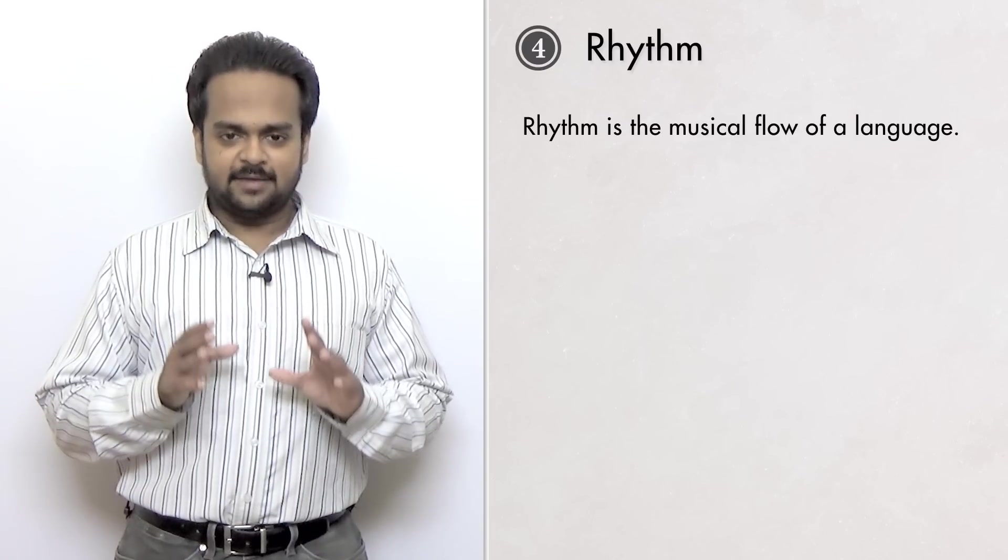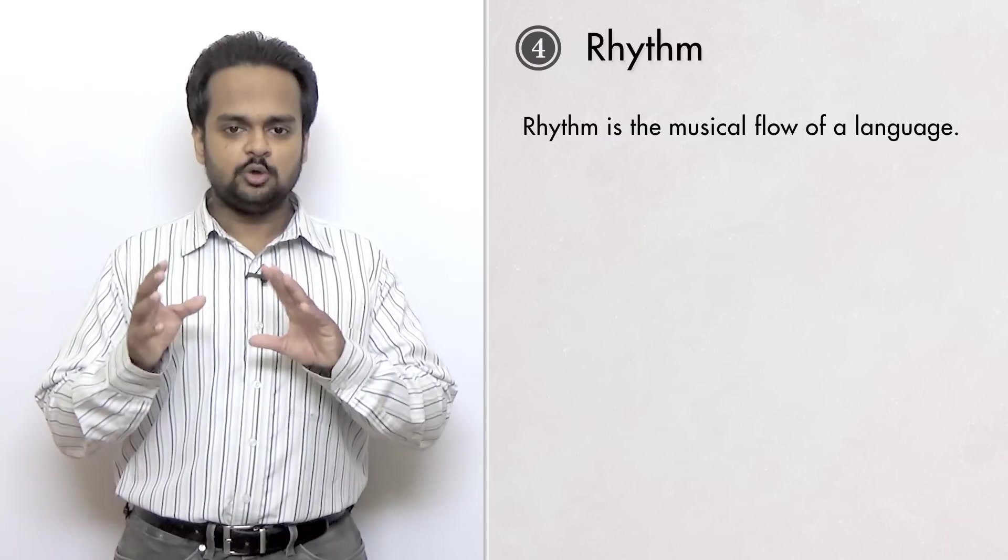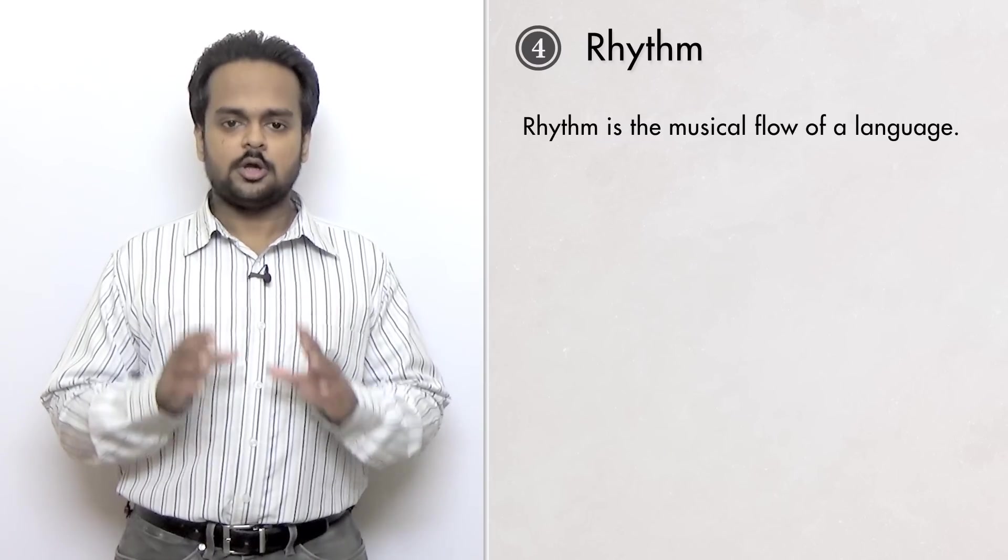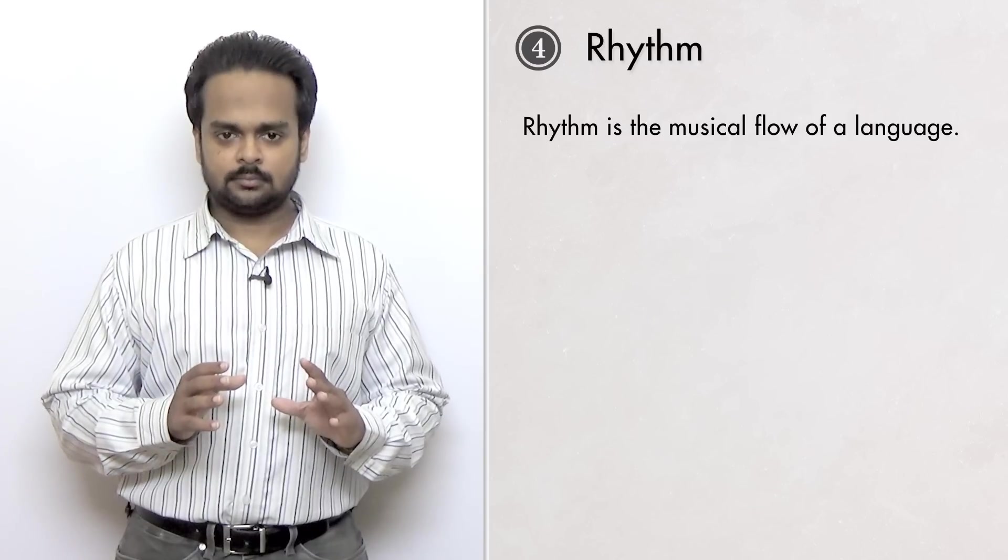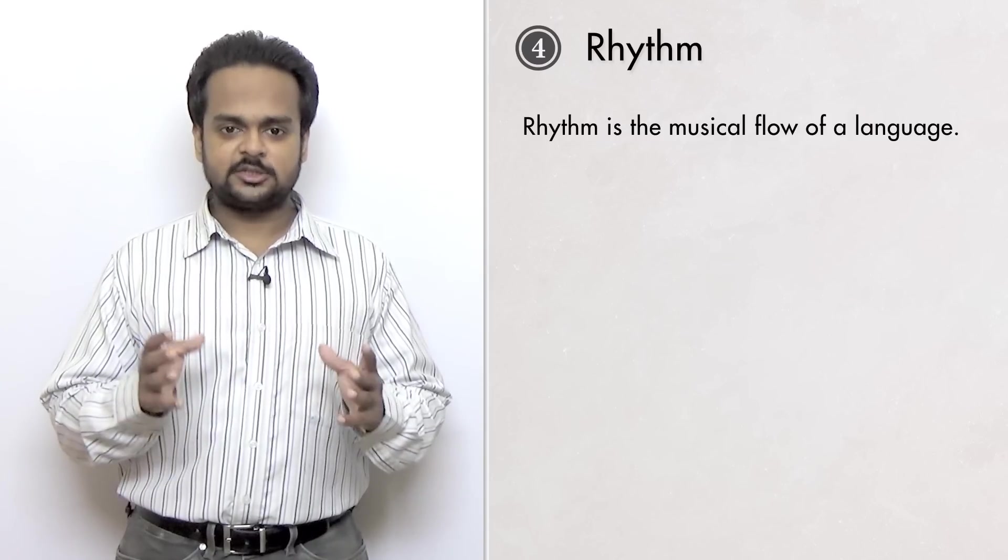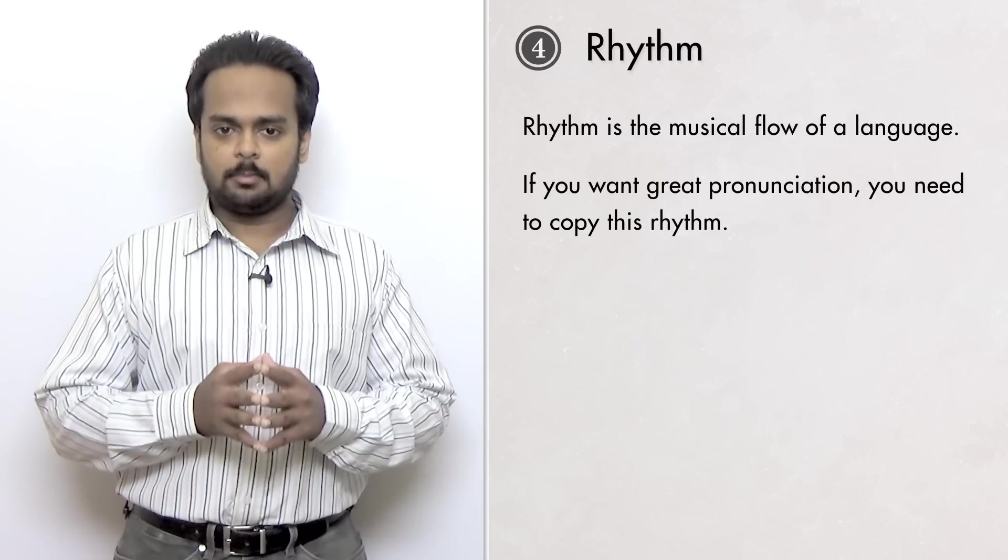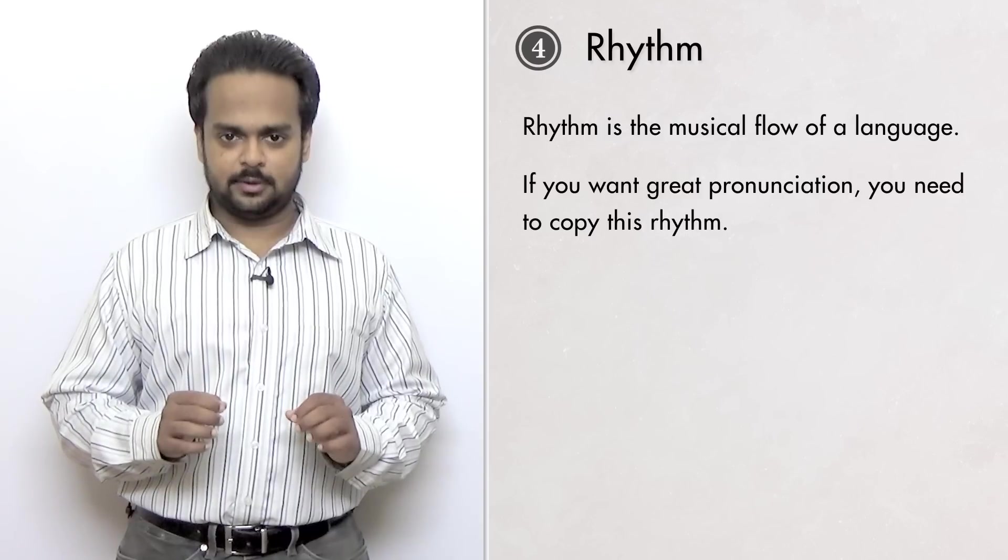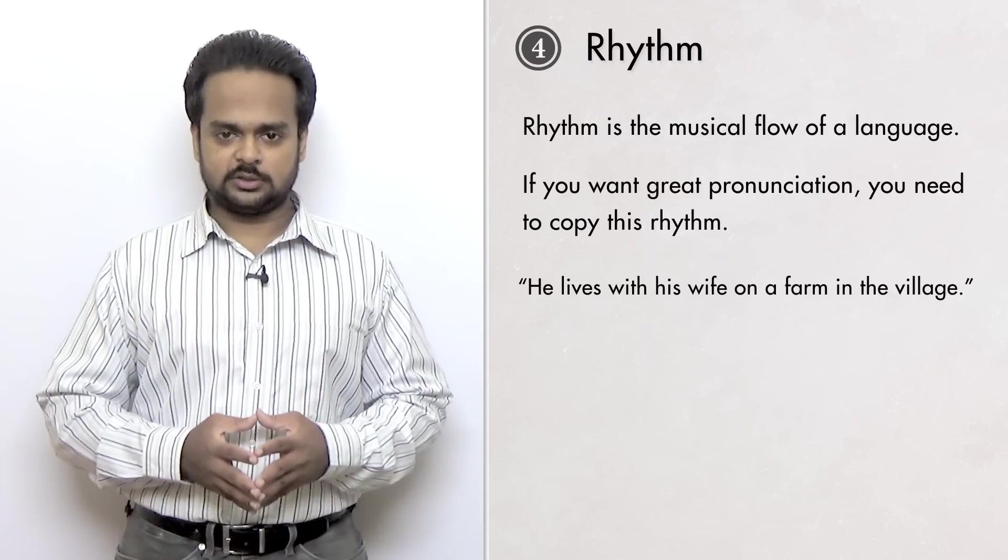And finally, number four is the most important aspect of pronunciation – rhythm. Rhythm relates to music. And we're talking about it here because every language has a kind of musical flow when native speakers speak it. This is called the rhythm of the language. English, of course, has its own rhythm. And if you want great pronunciation, you need to understand and copy this rhythm.